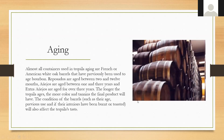Reposados are aged between two and twelve months; añejos are between one and three years; and extra añejos are aged longer than three years. The longer tequila ages, the more color and tannin it extracts from those oak barrels. The condition of the barrels — their age, previous use, and whether they've been toasted or burned — will also affect the final product.